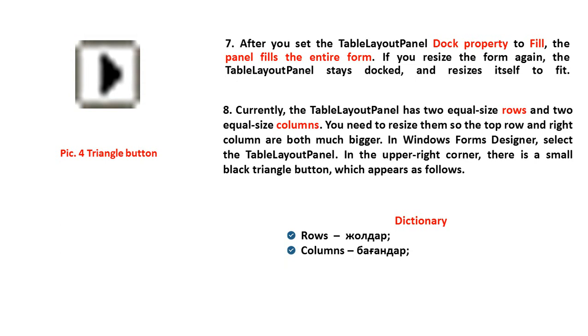In Windows Forms Designer, select the Table Layout Panel. In the upper-right corner there is a small black triangle button which appears as follows. New words: row, column.